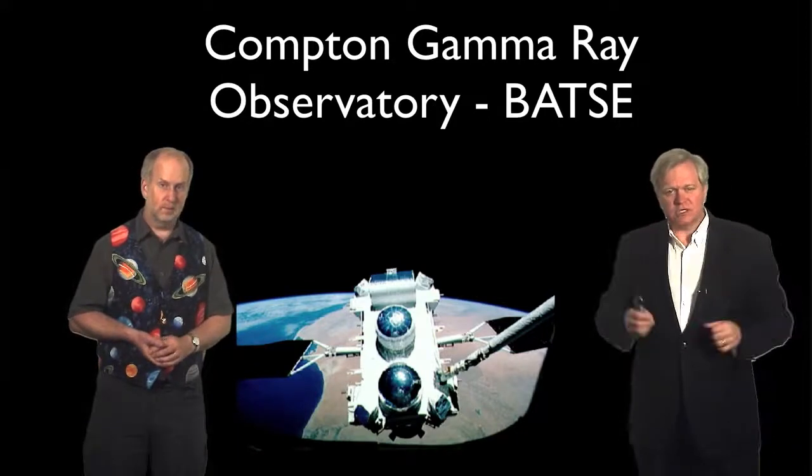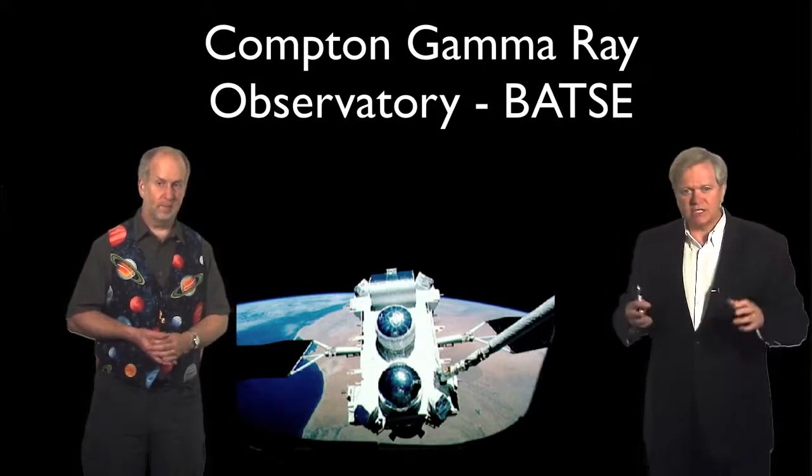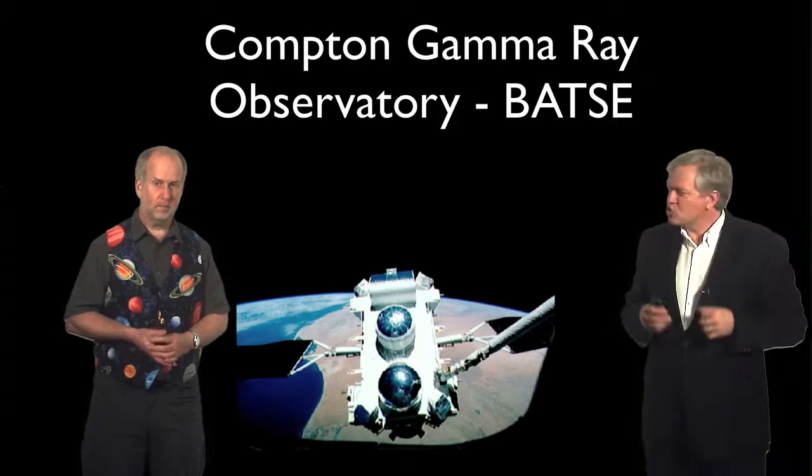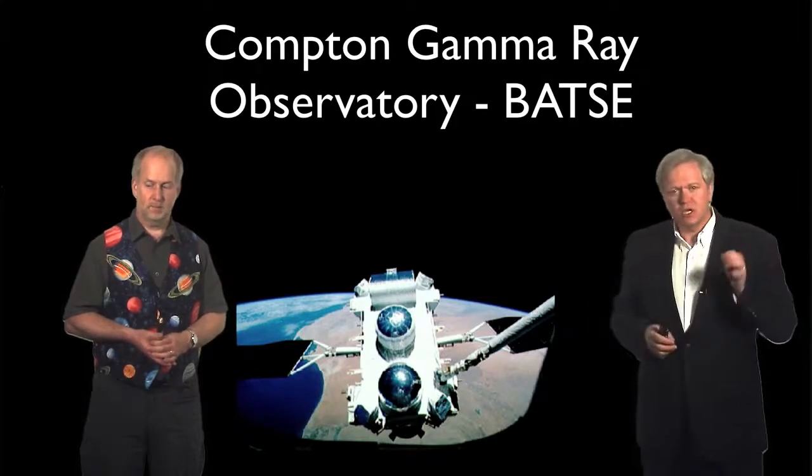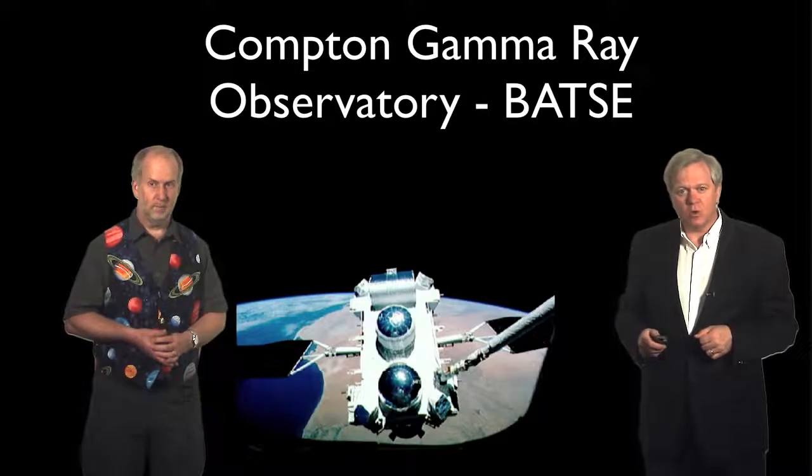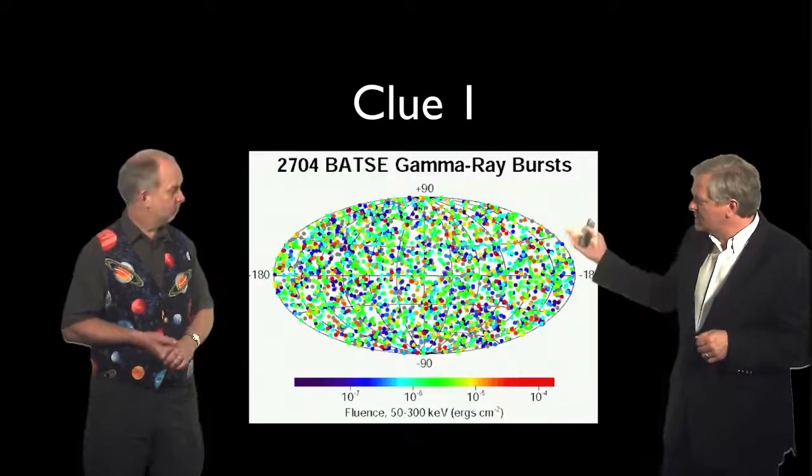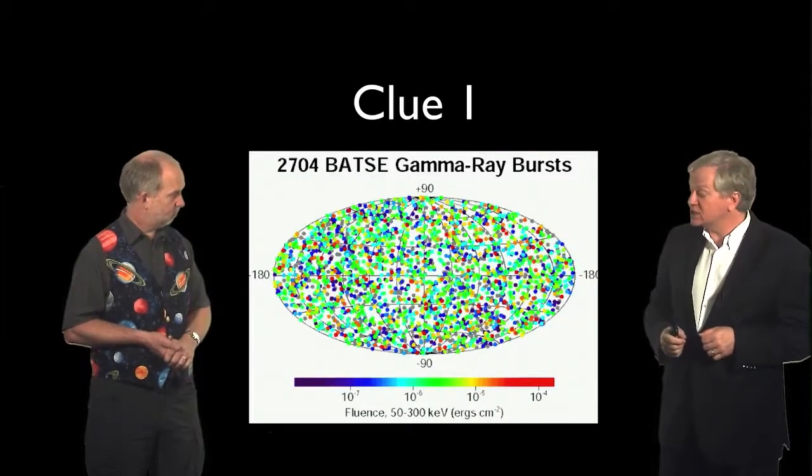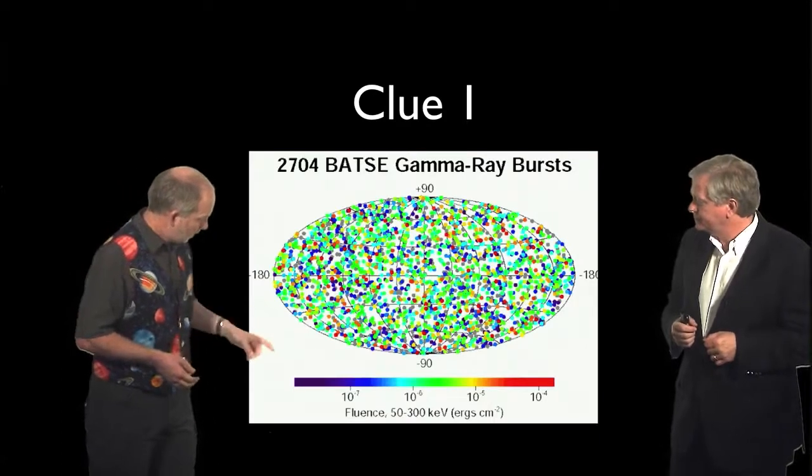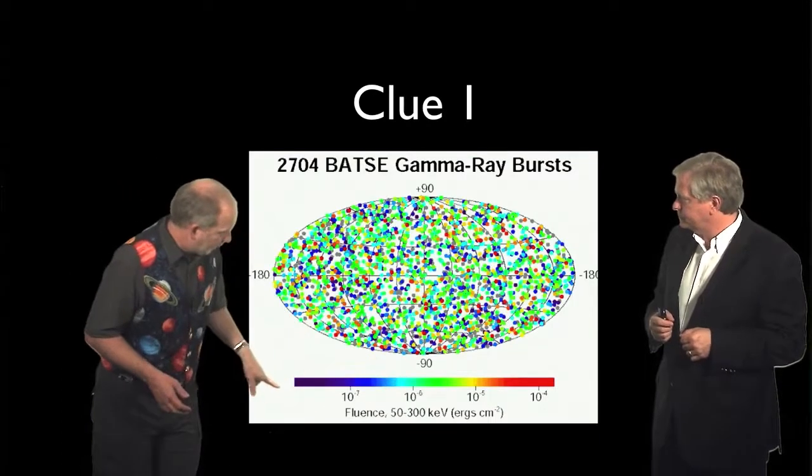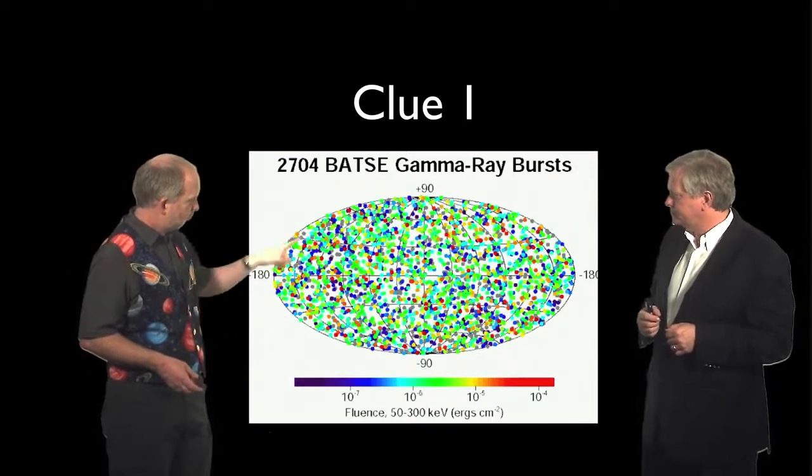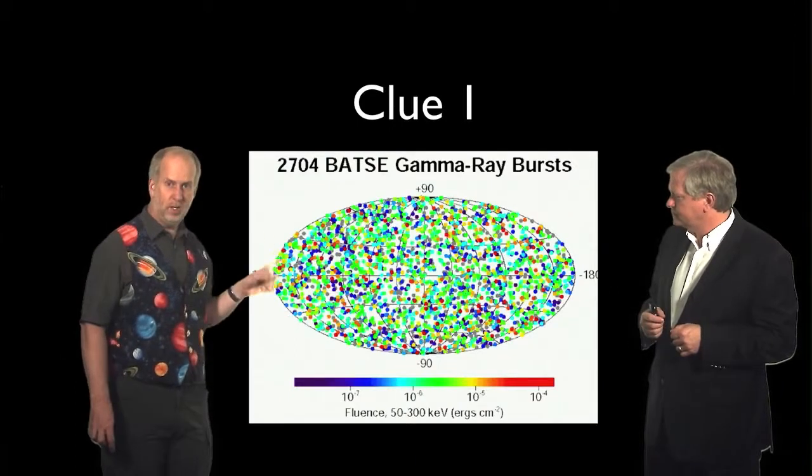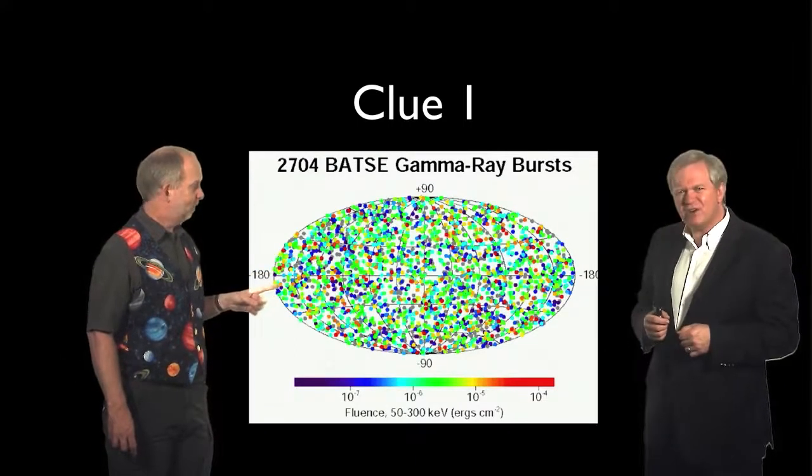So after this new observatory started taking data, it came up with three new clues to the origin of gamma-ray bursts. And so the first clue was this image of where they occurred on the sky. And what you can see is the color shows the energy, and this marks the location, and what you can see is no pattern. No pattern at all.